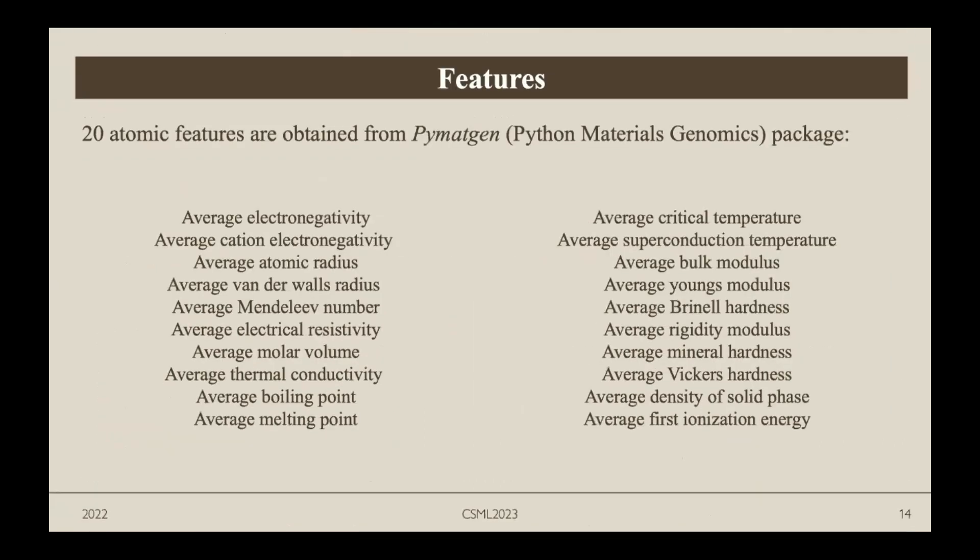For the features, we use 20 atomic features that are obtained from the pymatgen materials genomics package, an open source Python package. Those are the 20 atomic features.